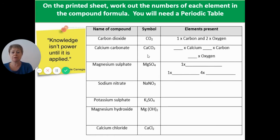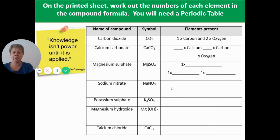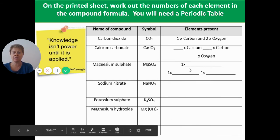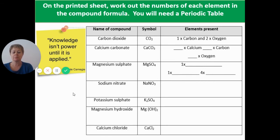Let's go through calcium carbonate CaCO₃: Ca means calcium, C means carbon — I've got one of each because there are no little numbers — and O for oxygen, I've got three of those. Pause the slide now and take a few minutes to work through each of the examples on the sheet, filling in the blank boxes in the same way.